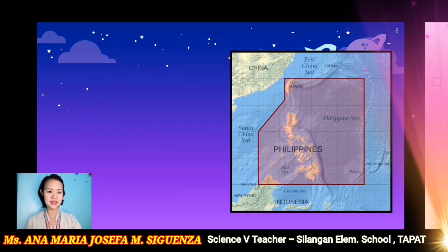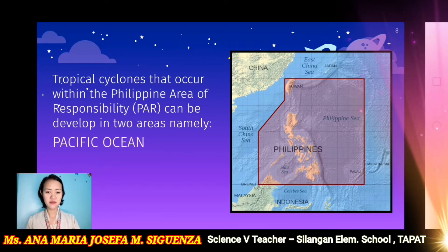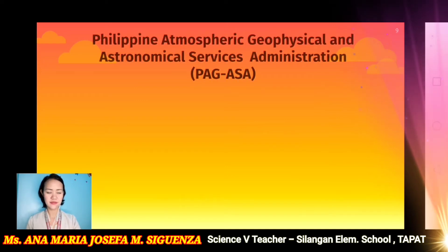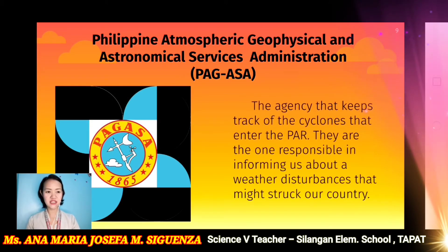That is the Philippine Area of Responsibility. Tropical cyclones that occur within the Philippine Area of Responsibility or the PAR can be developed in two areas. Some tropical cyclones can be developed over the Pacific Ocean, and some can be developed in the West Philippine Sea. The Philippine Atmospheric, Geophysical, and Astronomical Services Administration, or also known as PAGASA, is the agency that keeps track of the cyclones that enter the PAR. They are responsible for informing us about the weather disturbances that might strike our country.